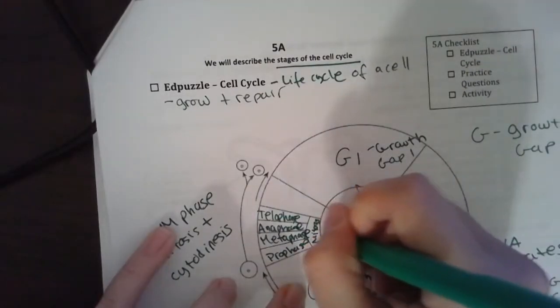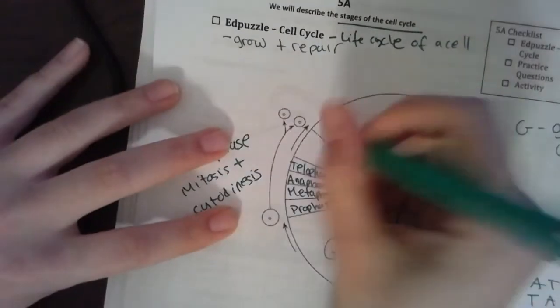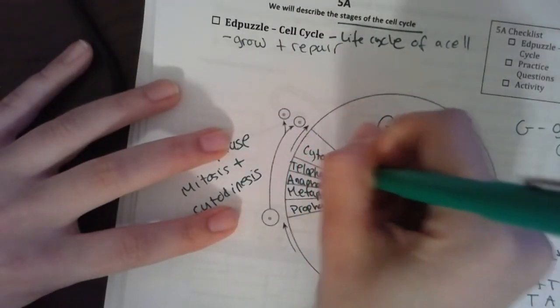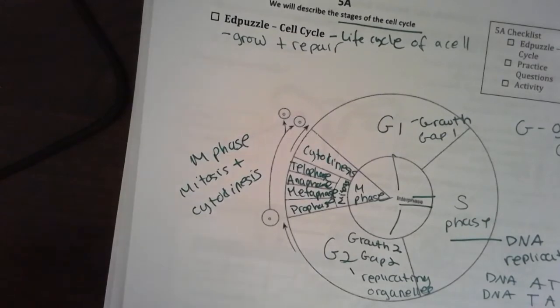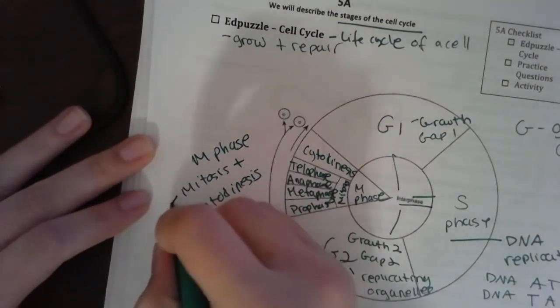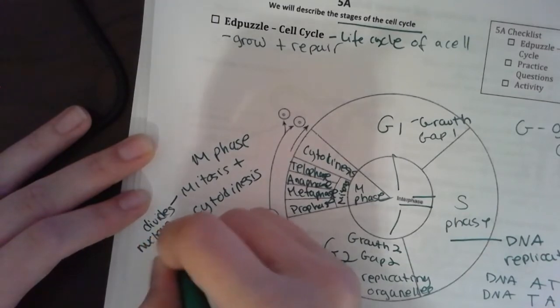This whole thing is called the M phase. After telophase, I go into cytokinesis, and that's the final part of division. I want to be clear: the M phase is about dividing the cell. Mitosis divides the nucleus and everything in it, so like the DNA.